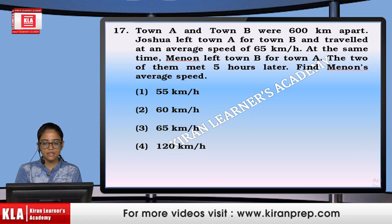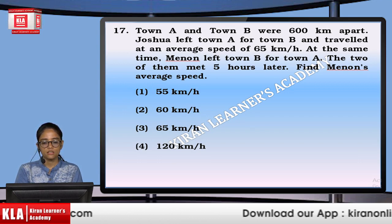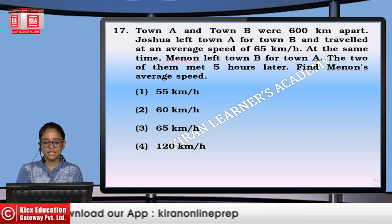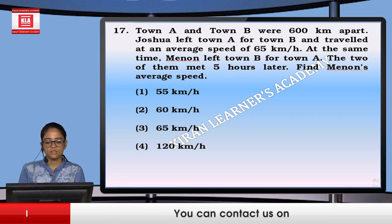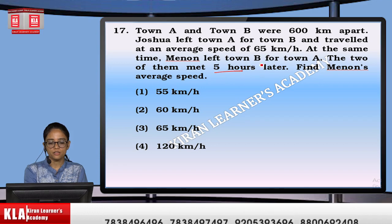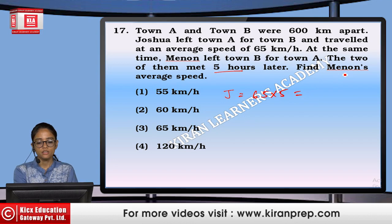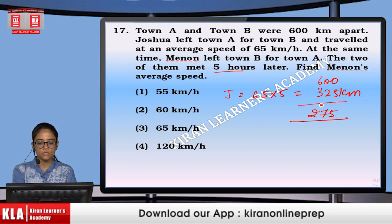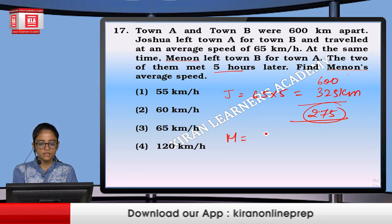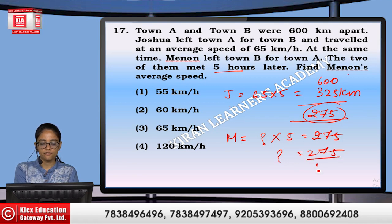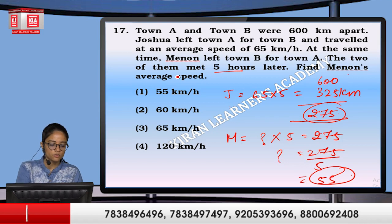Town A and town B are 600 km apart. Joshua left town A for town B at 65 km/h. At the same time, Menin left from town B for town A. The two met 5 hours later. Joshua covered 65 × 5 = 325 km. The remaining 275 km was covered by Menin in 5 hours, so Menin's speed is 275 ÷ 5 = 55 km/h. Option number 1.